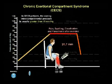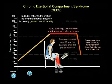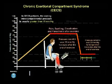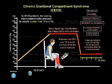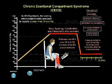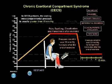Intracompartmental pressure that remains over 30 millimeters mercury one minute after the end of exercise, or pressure that remains over 20 millimeters mercury for longer than five minutes after the end of exercise, is considered diagnostic of chronic exertional compartment syndrome.